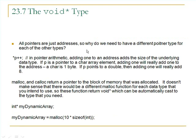Let's talk about the void pointer. All pointers are just addresses, so why do we need a different pointer type for each data type? We revisit this from the segments on arrays and pointers in the expression asterisk p++. In pointer arithmetic, we're adding 1 to an address, which really adds the size of the underlying data type in bytes. So if p is a pointer to an int, adding 1 adds 4 bytes; if it's a char, adding 1 adds 1 byte; if it's a double, adding 1 changes the address by 8.